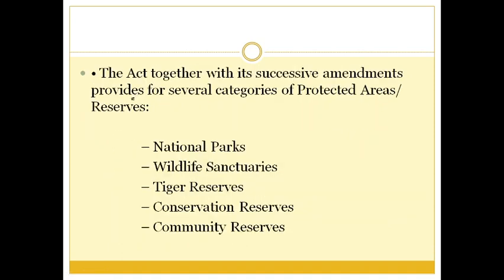For very specific protection, this act, together with successive amendments, provides for several categories of protected areas: national parks, wildlife sanctuaries, tiger reserves, conservation reserves, and community reserves. You may have heard about some of the national parks in India or some of the wildlife sanctuaries or tiger reserves. In every state you can see national parks, wildlife sanctuaries and other reserves that are specifically for protecting animals.